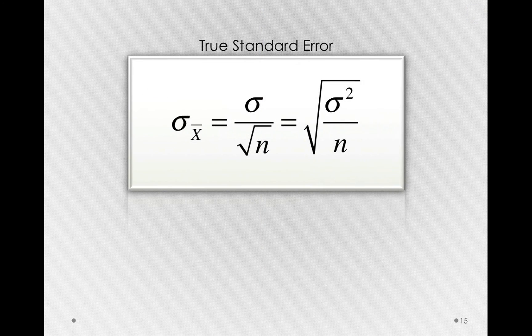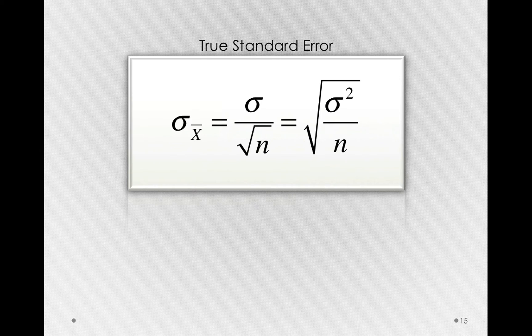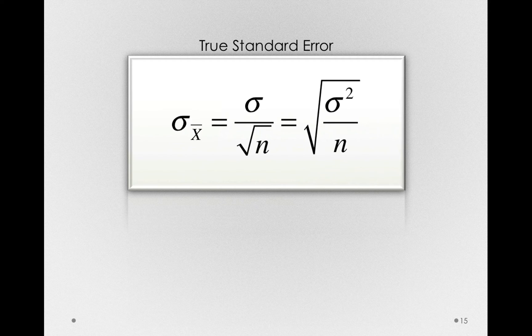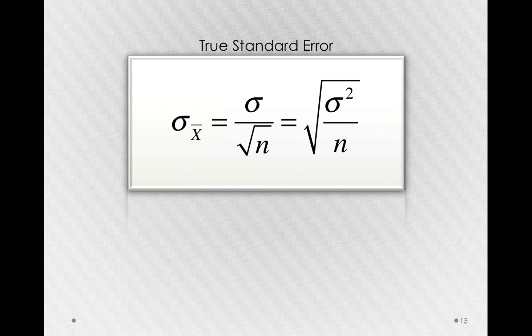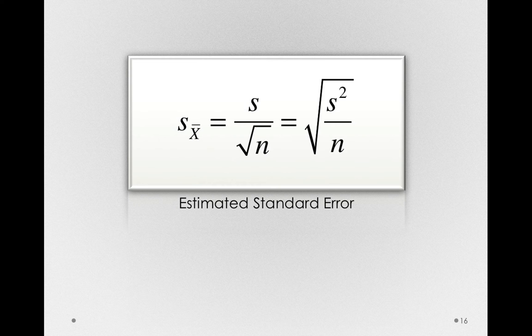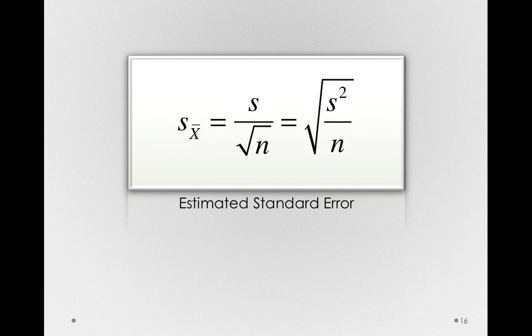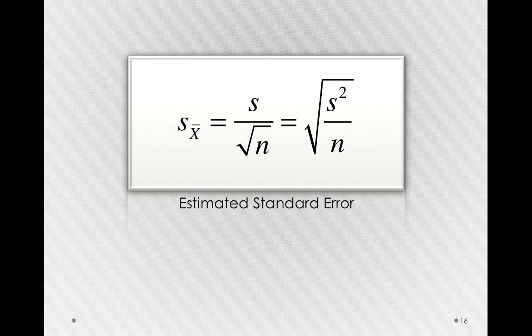So, notice how this will work. Here is our true standard error calculation. Either sigma divided by the square root of n, or the square root of sigma-squared over n. And our estimated standard error will simply substitute s for all the places we previously used sigma, or s-squared for the places we used sigma-squared.